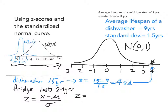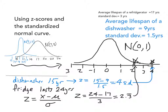If we do the same work with the refrigerator using the same formula — 24 years minus 17, divided by the standard deviation of 3 — that puts us at 2⅓ for its z-score. That's quite an impressive run as well, being 2⅓ standard deviations above the average lifespan of a refrigerator. But now that we've placed both on the standardized normal curve, you get a better view that, although both are impressive, this dishwasher has lasted well beyond what was expected.